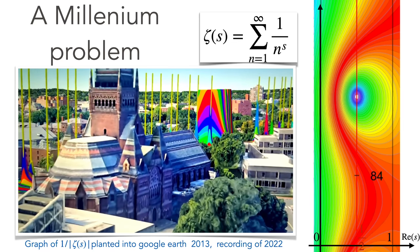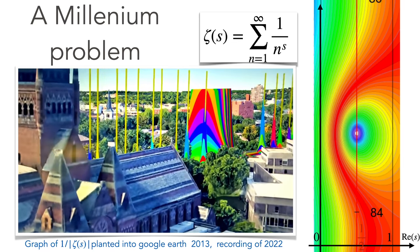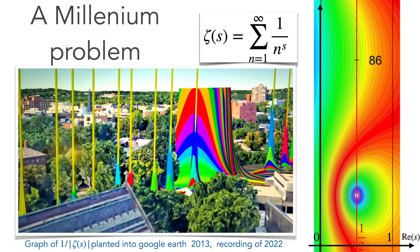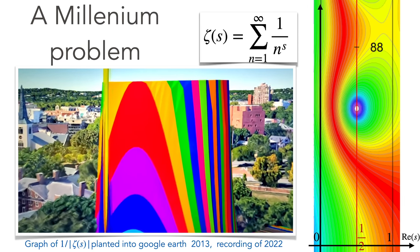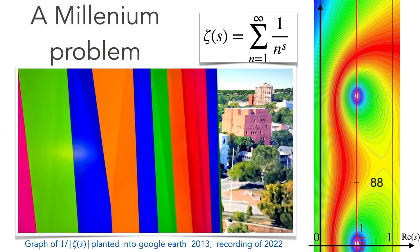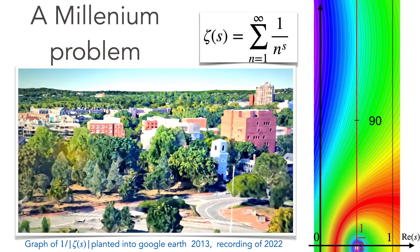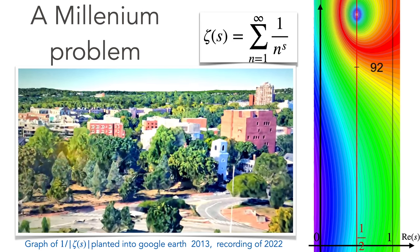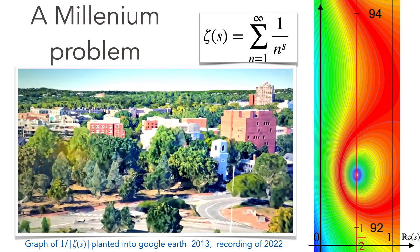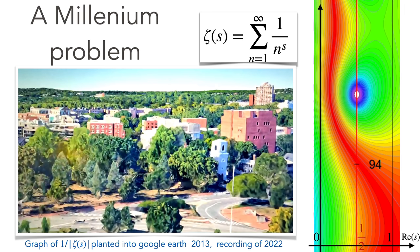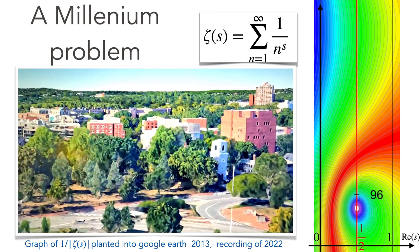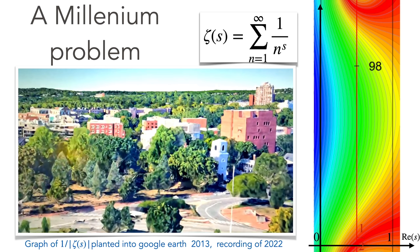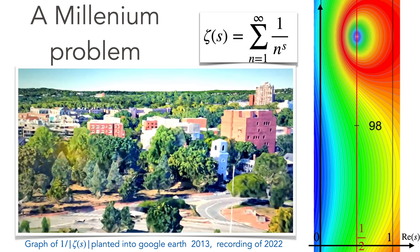So on the right hand side we see the critical strip and we see that quite many roots between 80 and 100, they are all located on this critical strip. It's also a one million dollar problem and probably the most important open problem in mathematics.